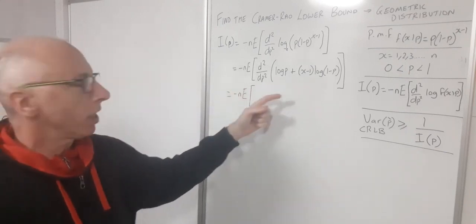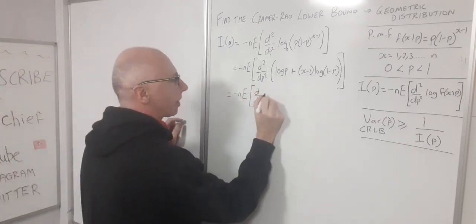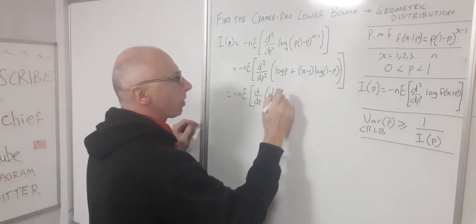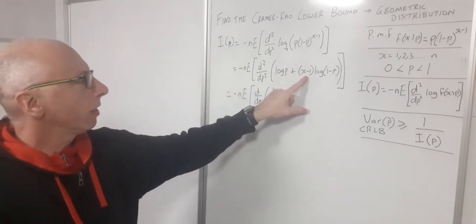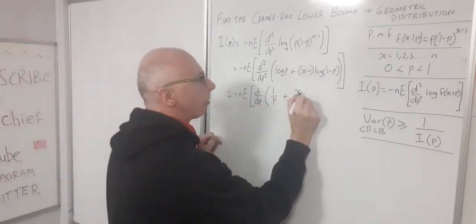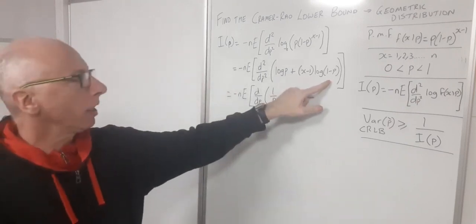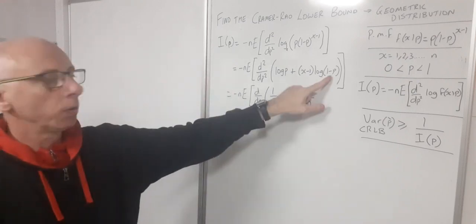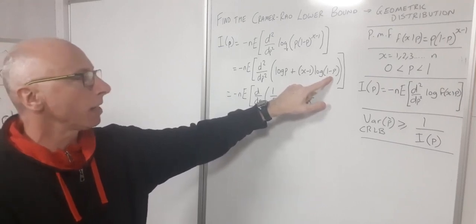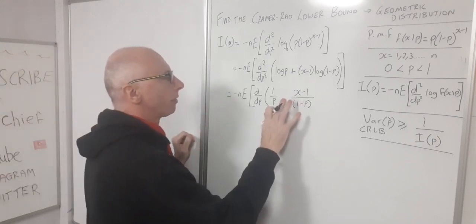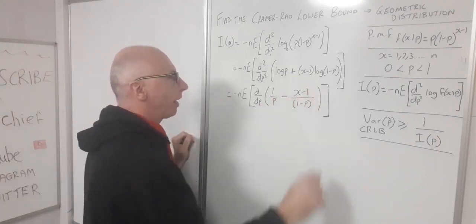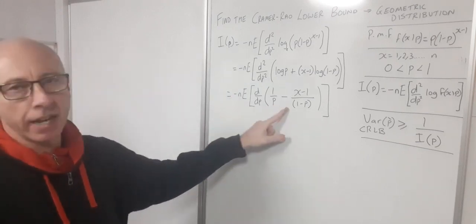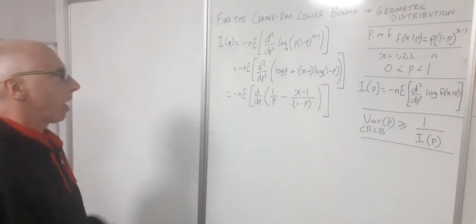Now taking the first derivative of this expression. The derivative of log p is 1 over p. Then for the second term, x minus 1 doesn't involve p so it stays in the numerator, and the derivative of log(1 minus p) gives 1 over (1 minus p), but by the chain rule the derivative of (1 minus p) is negative 1, so the sign changes to minus. We now have negative n times the expectation of the first derivative result.